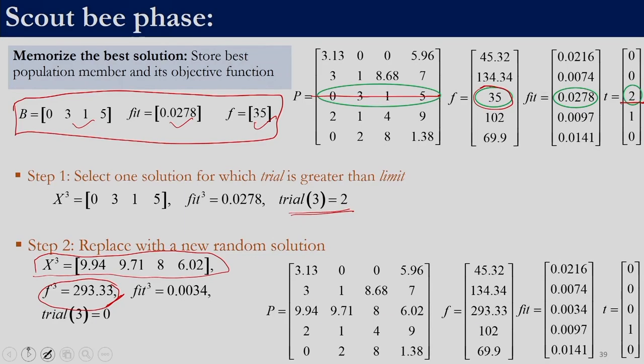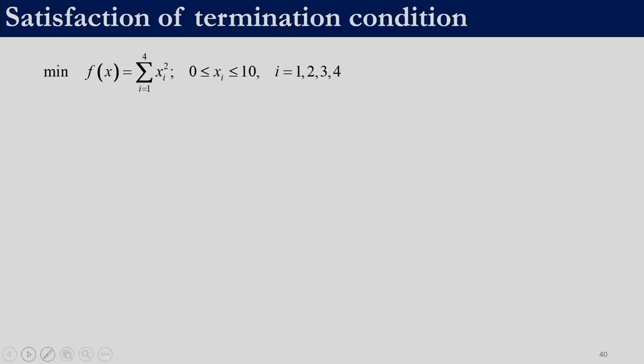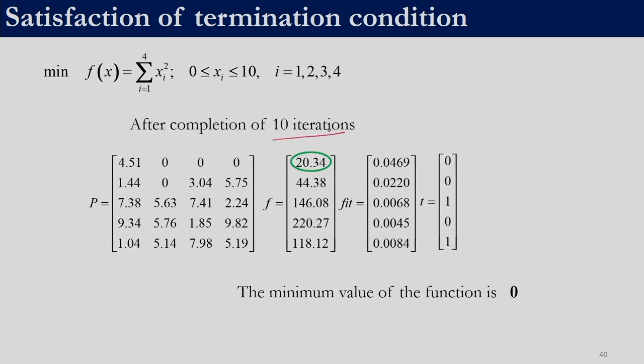That completes the scout bee phase of the first iteration. With the same settings, continuing for 10 cycles, the food source values at the end of 10 iterations are reported. The best value obtained is 20.34 — the least objective function value, which corresponds to the highest fitness value since objective function and fitness are inversely related in ABC. With a swarm size of 10, 10 cycles, and a limit of 1, this is the optimal solution as determined by the ABC algorithm.